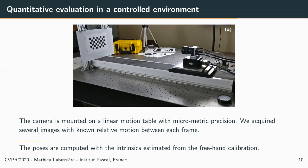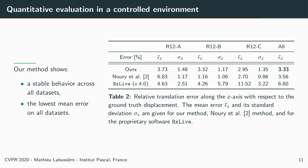To evaluate quantitatively our calibration, we mounted the camera on a linear motion table with micrometric precision and acquired several images with known relative motion between each frame. The poses are then computed with the camera parameters estimated from the calibration. This table shows the relative error along the z-axis with respect to ground truth displacement, for our method, Nouri et al.'s method, and the depth obtained from the proprietary software RxLive. Our method is the only one presenting coherent error across all datasets, and shows the lowest mean error of 3.3%.